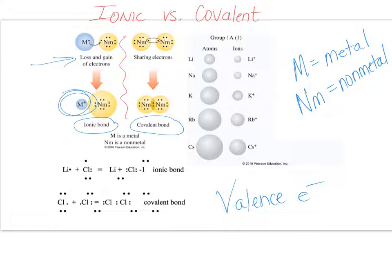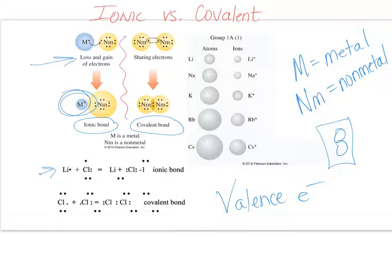Why do elements gain, lose, or share electrons? All elements aspire to have the same electron configuration as a noble gas — a filled highest level, whether that's 1s2 or 2s2 2p6. That filled configuration makes them stable and very unreactive. All other elements work to achieve that by gaining, losing, or sharing electrons. The octet rule says everyone wants eight around them.